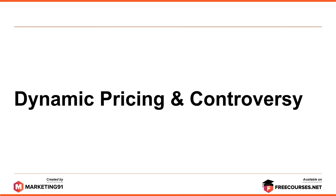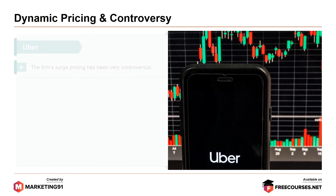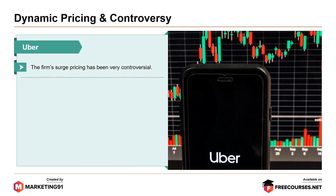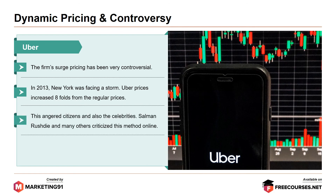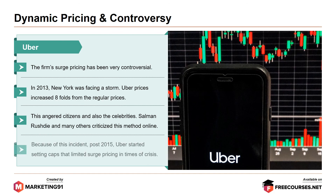Finally, dynamic pricing and controversy: Uber's surge pricing has been very controversial. In 2013, New York was facing a storm and Uber prices increased eight-fold from the regular prices. This angered citizens and celebrities alike — Salman Rushdie and many others criticized this method online. Because of this incident, post-2015, Uber started setting caps that limited surge pricing in times of crisis.